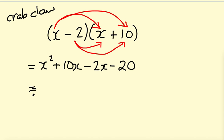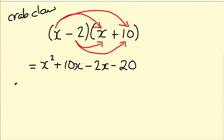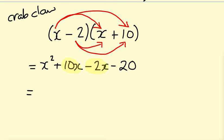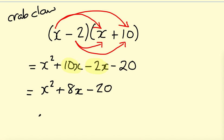Continuing: minus 2 times X gives minus 2X, and minus 2 times plus 10 gives minus 20. We haven't finished because we need to simplify. Let's highlight the like terms: X squared stands alone, but we've got plus 10X and minus 2X which are like terms, so combining them gives plus 8X. The minus 20 stays, giving X squared plus 8X minus 20.